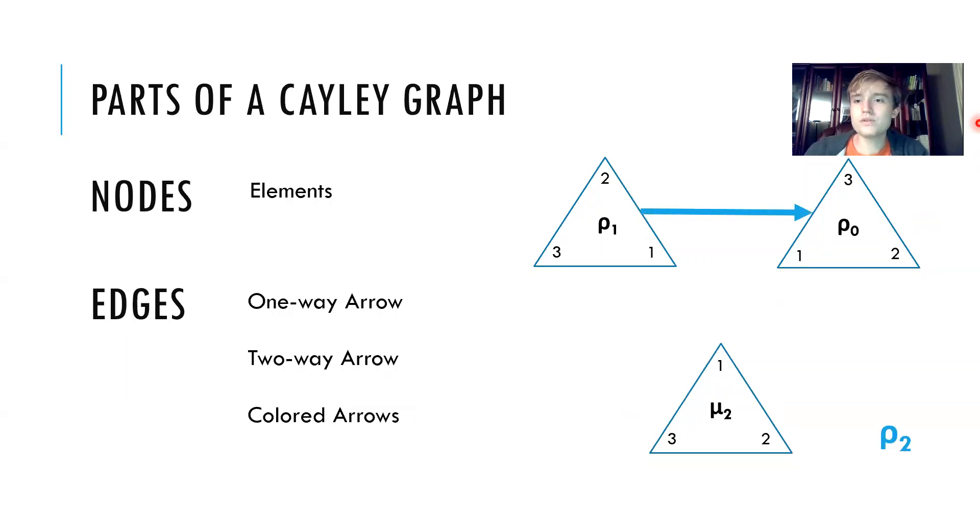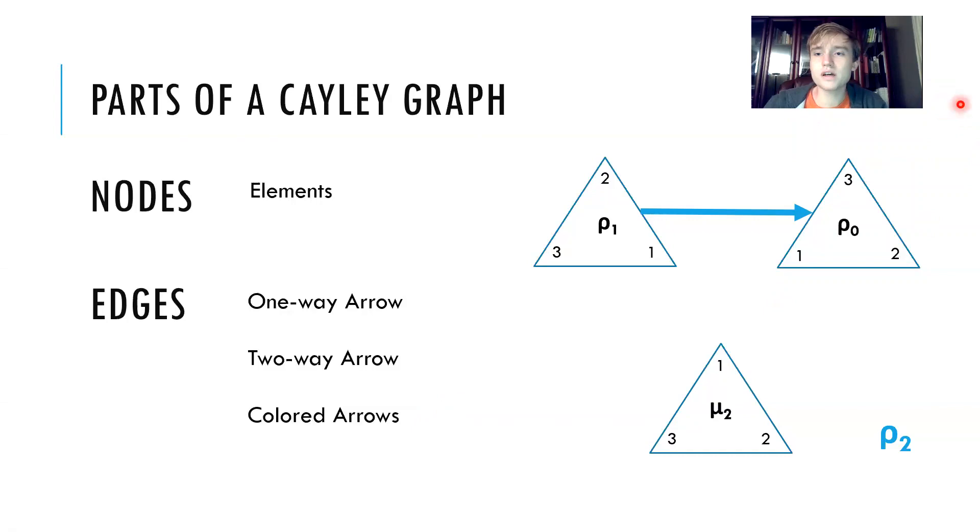If we're trying to go from element to element with an operation with some other element, this arrow right here indicates that we're performing the operation rho one, rho two, and that results in rho naught.